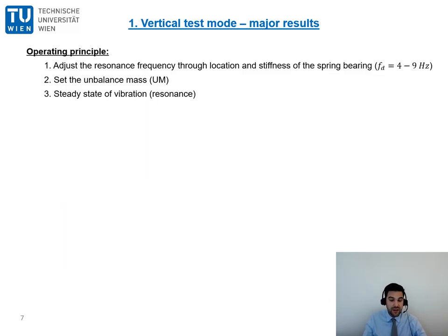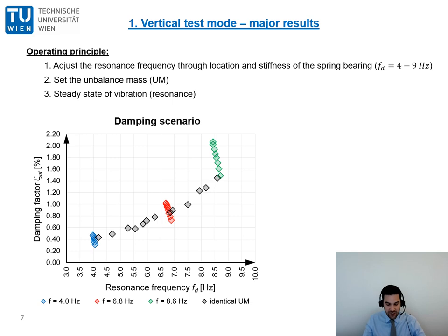Now let's get straight to the results from the experiments. At first I will discuss the vertical test mode. The operating principle follows a three-point approach. At first the location and stiffness of the spring bearing is adjusted to set the resonance frequency. Then the unbalanced mass in the exciter is set. The higher the used unbalanced mass the higher are the vertical displacements and accelerations. Then the oscillation test runs at resonance. At this point I come directly to the results and here the damping factor is of particular interest. In this chart now you can see the damping factor depending on the resonance frequency. And here some very interesting correlations appear.